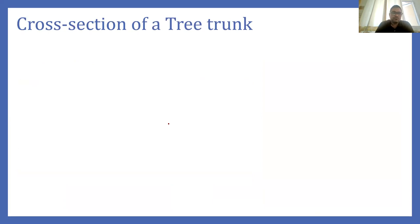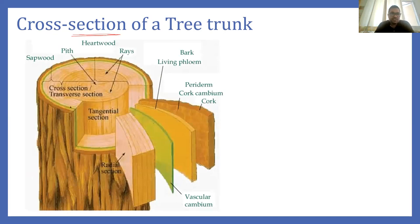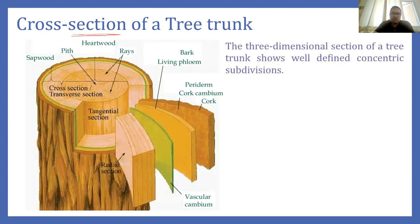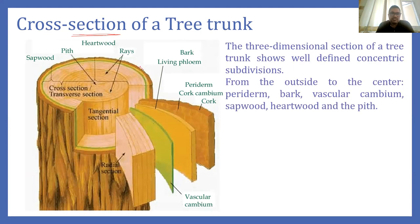To understand timber, we will first look at the cross section of a tree trunk — its physical appearance and function. In this photo you can see the three-dimensional view of a tree trunk. The outside layer is known as the bark. Inside the bark is the live portion called the sapwood. In the center we have the heartwood, where the tissues are mostly dead. Only in the sapwood are there live tissues.